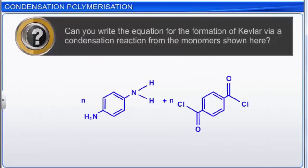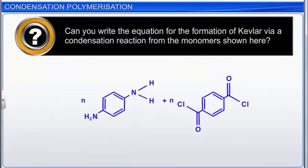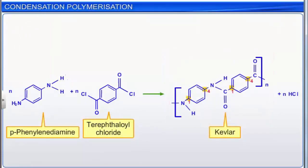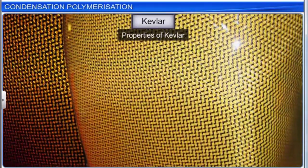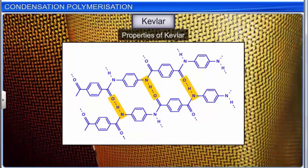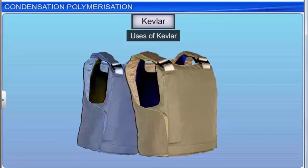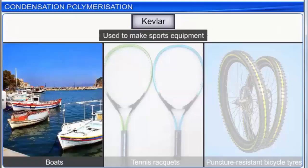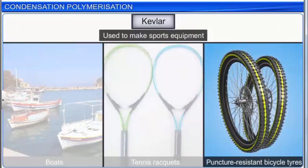Kevlar is formed via a condensation reaction from two monomers that form a polyamide chain with para (1,4) linkages. HCl is formed during the condensation reaction. Kevlar fibers are very strong as many hydrogen bonds are present between the chains. Kevlar is used to make protective gear including bulletproof vests, a variety of sports equipment including boats and tennis rackets, and puncture-resistant bicycle tires.